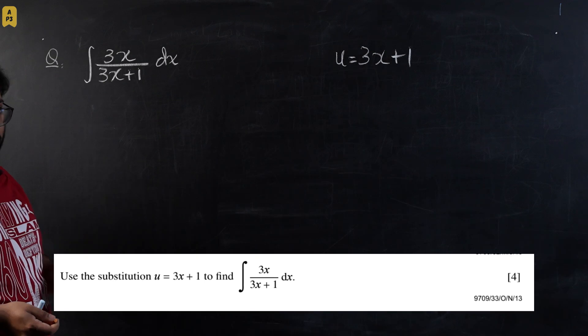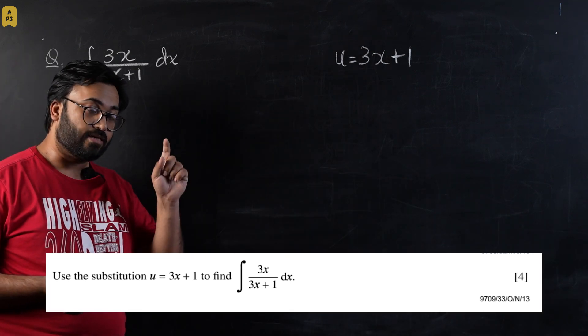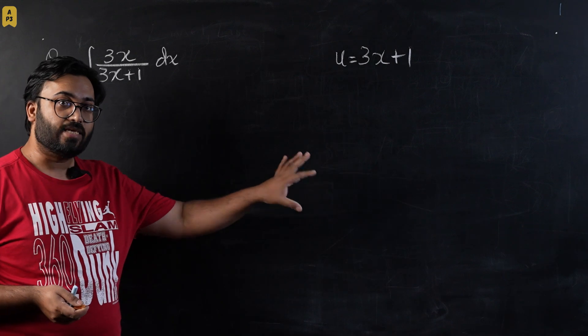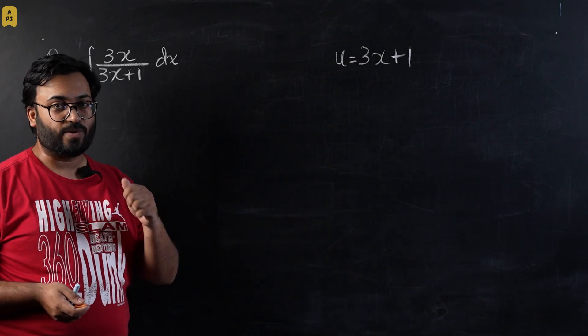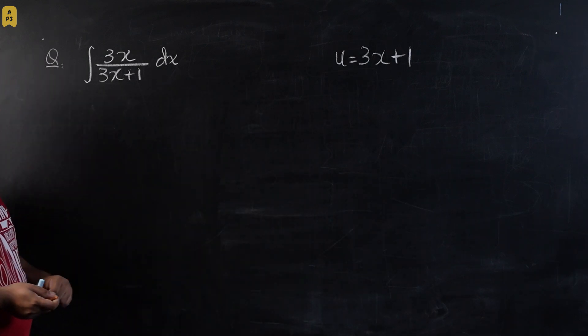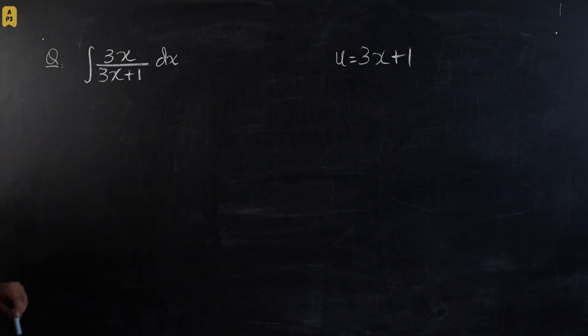So let's see this question. This is going to be a tricky one. Please pause the video and go through the question. Try it once before looking at the solution. That way you can retain the solution to the maximum because once you have thought about the question, it's easier for our brain to retain the solution. So let's start with the solution. This is an integration of 3x over 3x plus 1, where u is given as 3x plus 1.